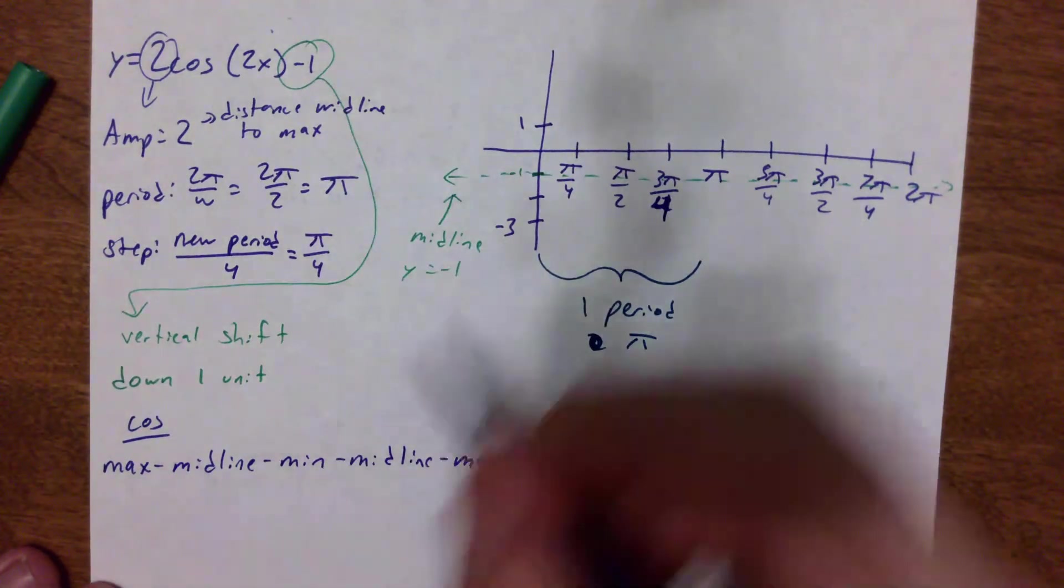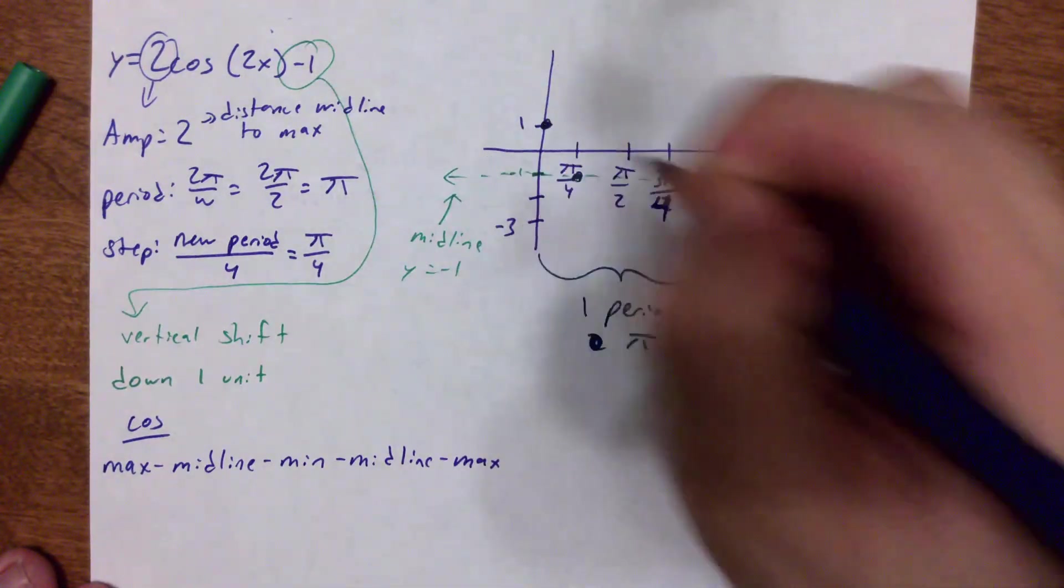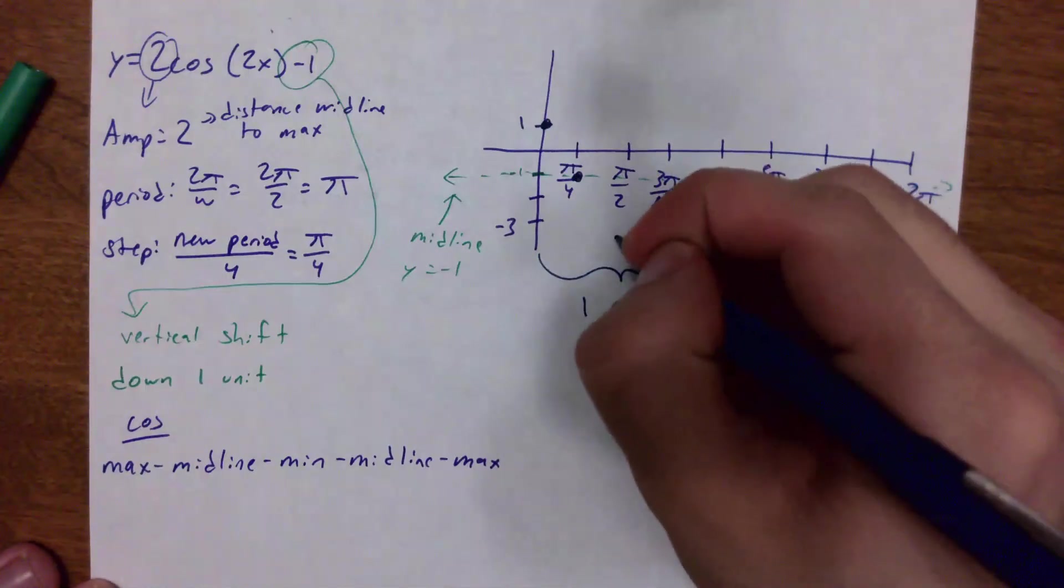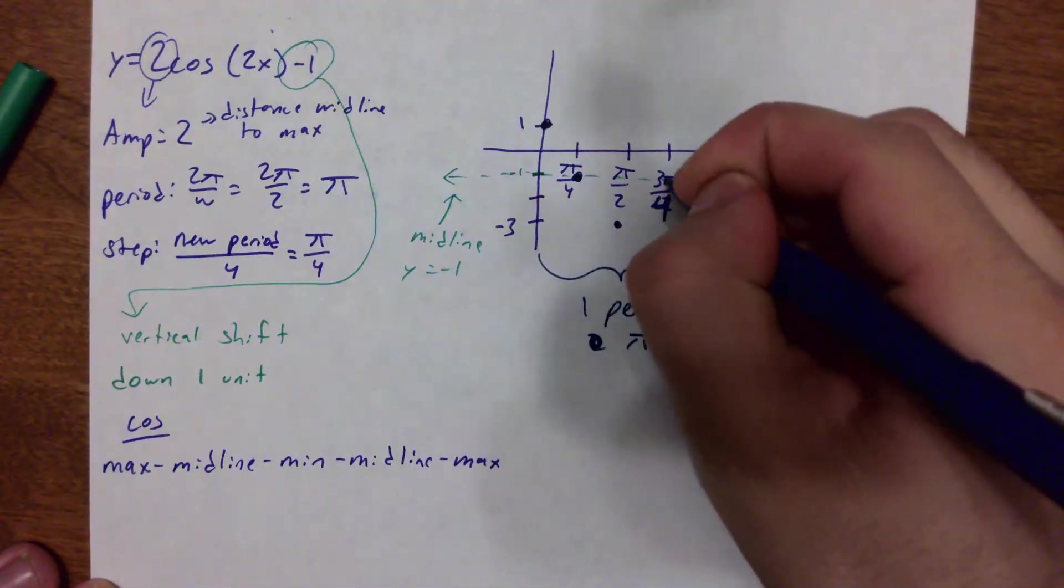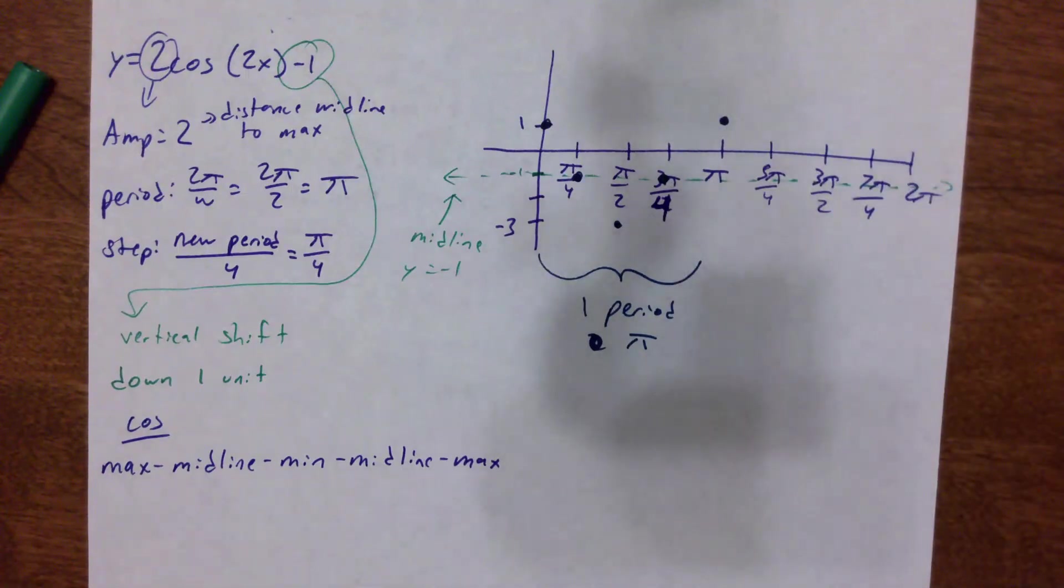So I'm just going to start. Hey, I start at my maximum, drop down to my midline. Again, I get down to negative 1, to the minimum, to the midline, to the maximum. Again, that is 1 period.